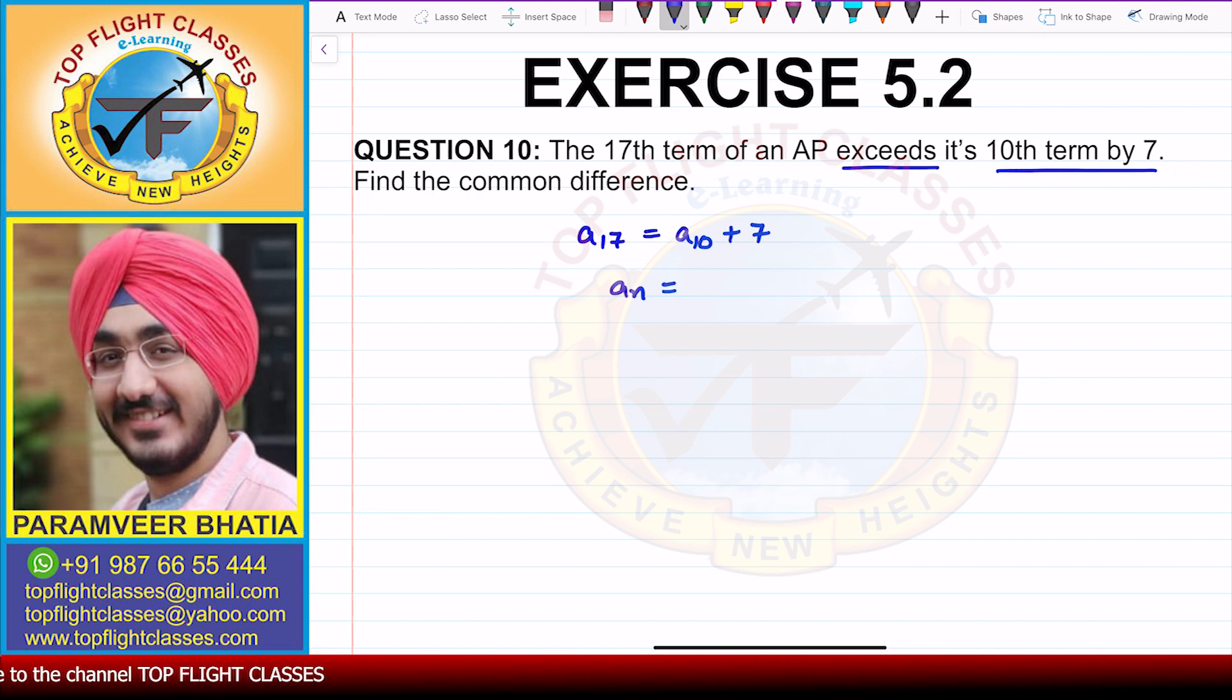The nth term is given by a plus (n-1) times d. So if we find a_17, we get a_17 is a plus (17-1)d, which gives us a plus 16d. That is a_17.